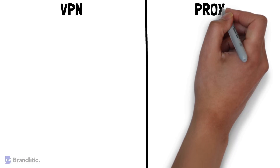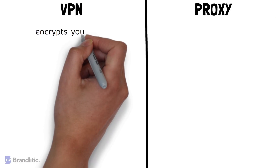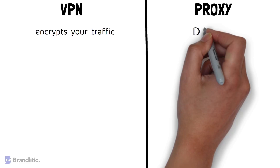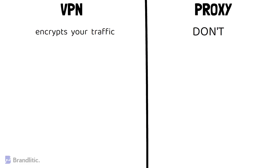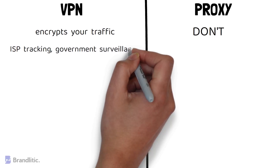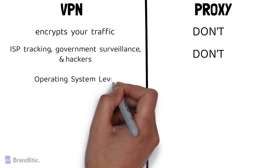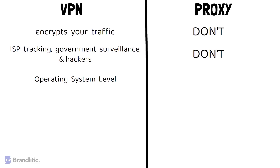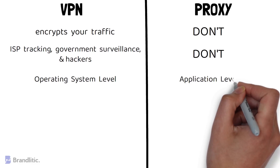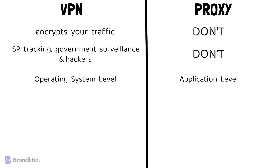Next, here's a quick comparison between proxy vs VPN. First, VPN encrypts your traffic while proxy servers don't. A VPN service provider protects you from ISP tracking, government surveillance, and hackers — proxies don't, so they should never be used to handle sensitive information. Second, VPNs work on the operating system level and reroute all your traffic, while proxies work on the application level and only reroute the traffic of a specific app or browser.